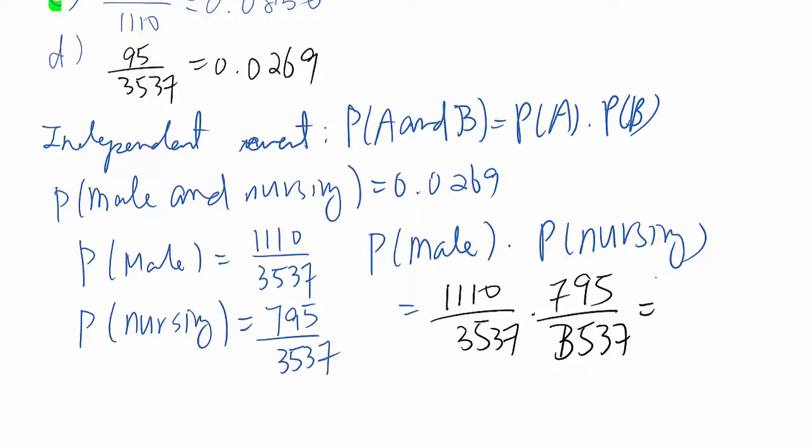It becomes 0.0705. So as you see, this number and this number, they are the same. Therefore, they are dependent events.